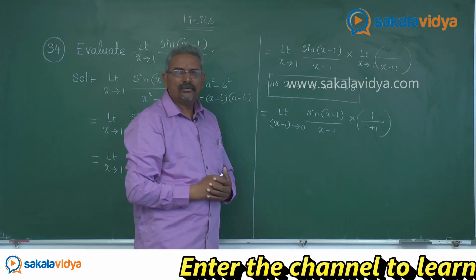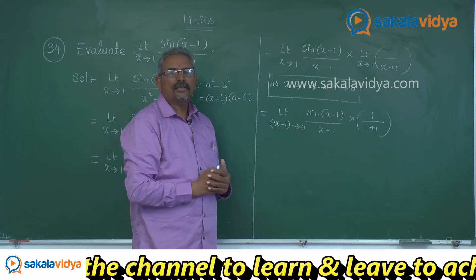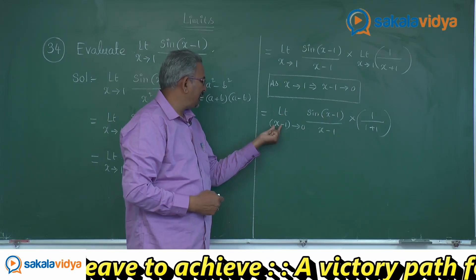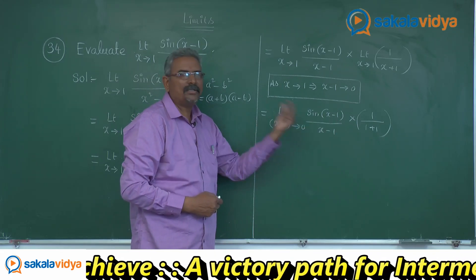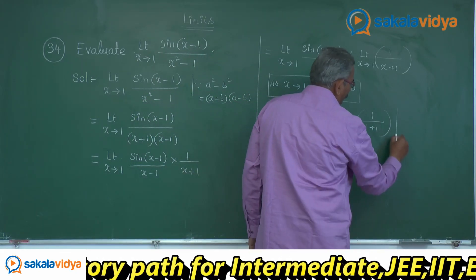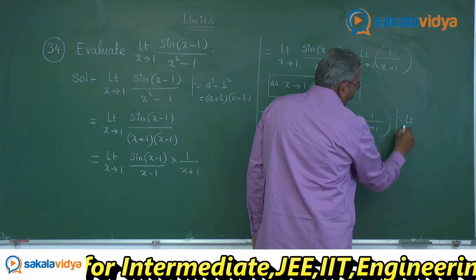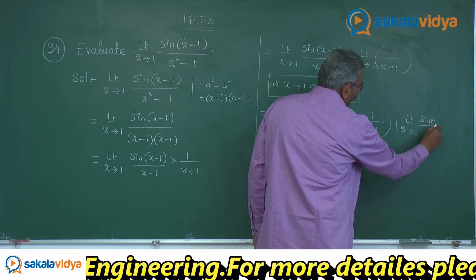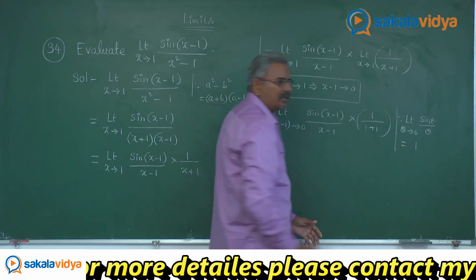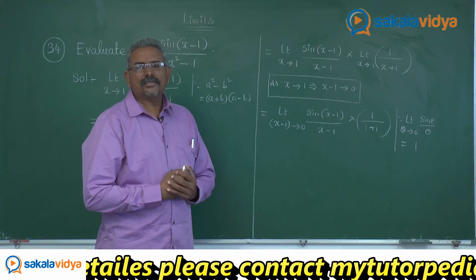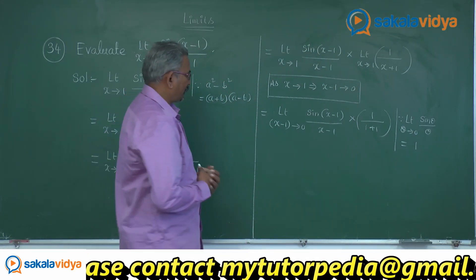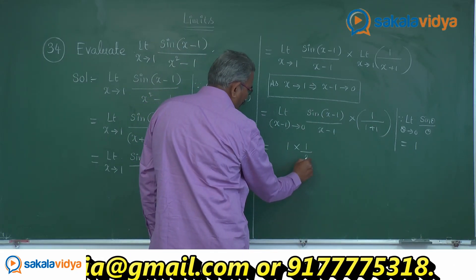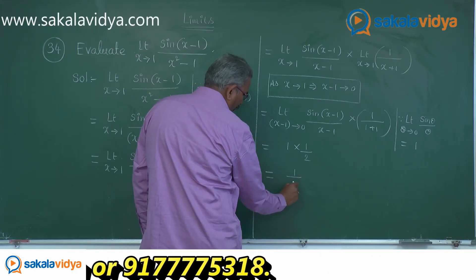If we say x minus 1 is theta, this becomes limit theta tends to 0 of sin θ / θ. Using that standard result, limit theta tends to 0 of sin θ / θ equals 1. So this can be written as 1 multiplied by 1/2, which equals 1/2.